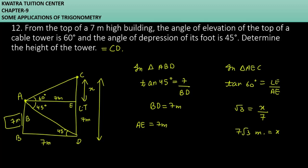Now we need to find total CD. CD's value is CE plus ED. CE is 7 root 3, ED is 7. Taking 7 common, 1 plus root 3. So 7 times (1 plus root 3) meters. This is the height of the tower. This is your answer for the 12th problem. Now moving to the 13th one.